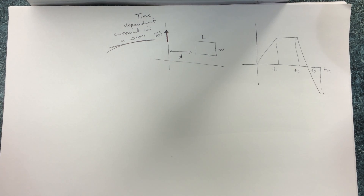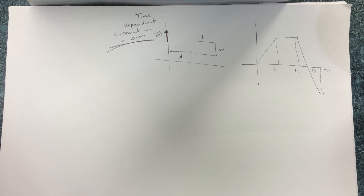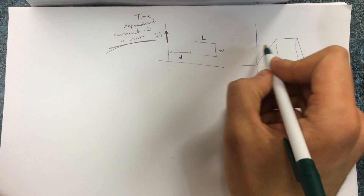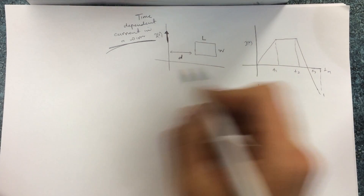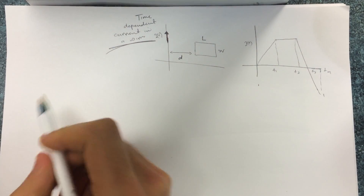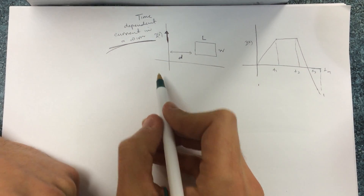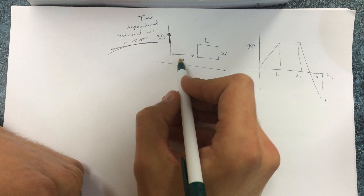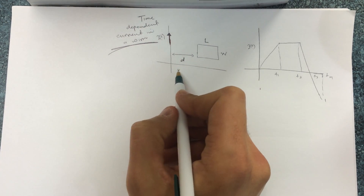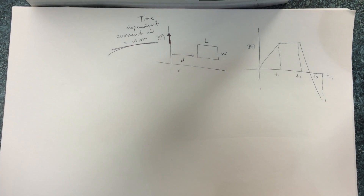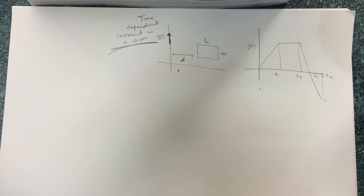This problem is about the time-dependent current in a wire. This graph shows current versus time, and this is just a wire here, and this is the distance x.